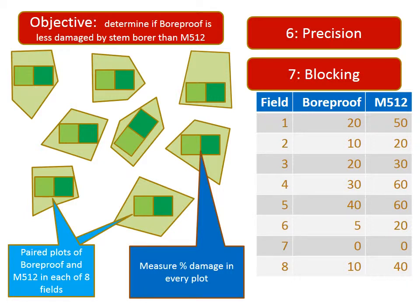Looking at the results, I can see that bore-proof had lower damage than M512 on every field except number 7, and that had no stem borer anyway. That must be convincing evidence in support of my hypothesis.